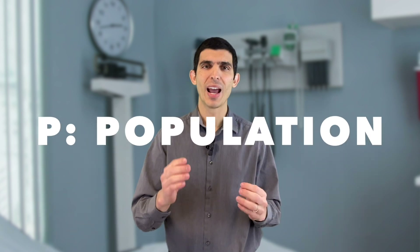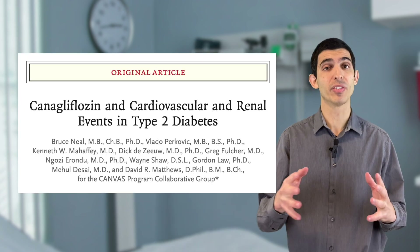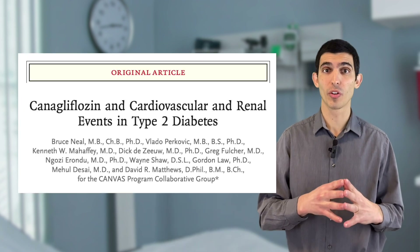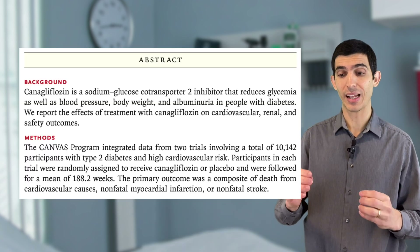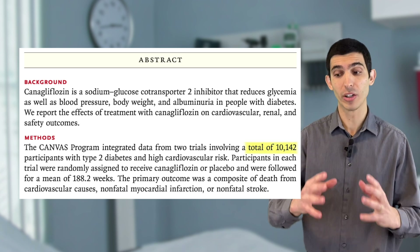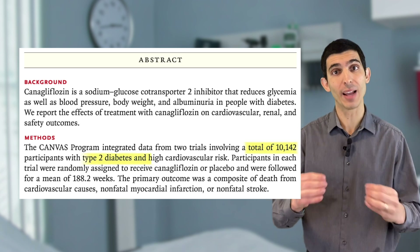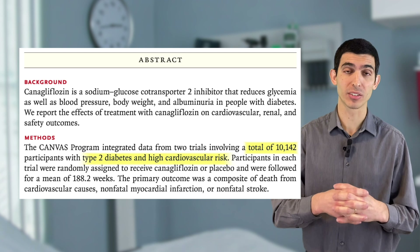To help you with these situations, I want to introduce a very specific framework called PECON. This acronym starts with the letter P — P for population. You can get the population of the study from the abstract, but you should also take a look in the methods section. Let's take the Canvas trial published in the New England Journal of Medicine as an example. If you read the abstract, you'll quickly see that they enrolled 10,142 patients with type 2 diabetes and high cardiovascular risk.